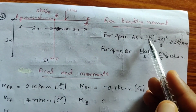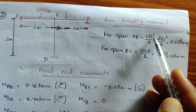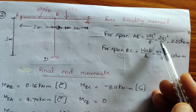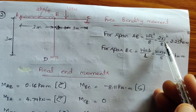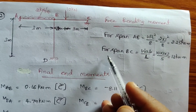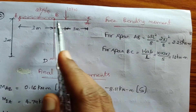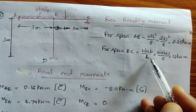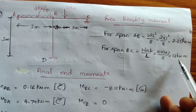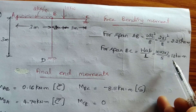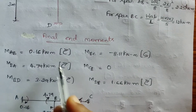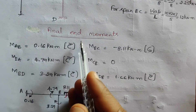For span AB with UDL, the bending moment formula is WL²/8, which equals 2 × 3² / 8 = 2.25 kN·m. For span BC with an eccentric concentrated load, the formula is WAB/L, so 10 × 2 × 3 / 5 = 12 kN·m. I have applied the slope deflection method and calculated the final end moments for each end.